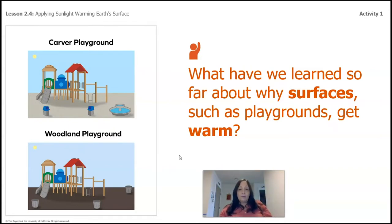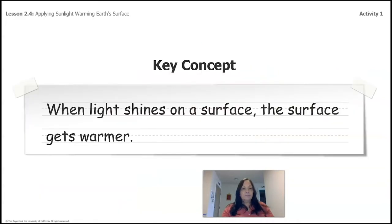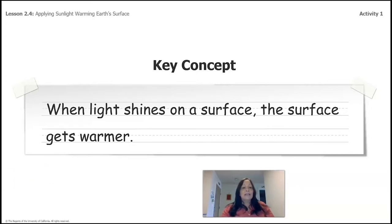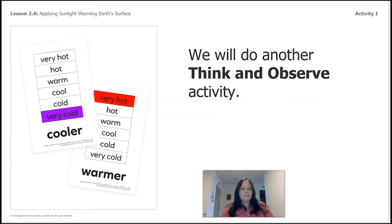We also used a model — remember the model that we showed you? So that is one of the things we already learned. The main thing we need to remember is that when light shines on a surface, the surface gets warmer. When light shines on a surface, the surface gets warmer.